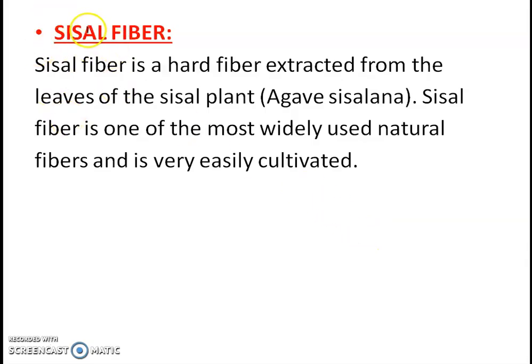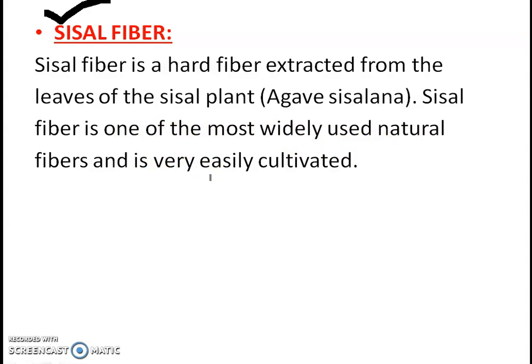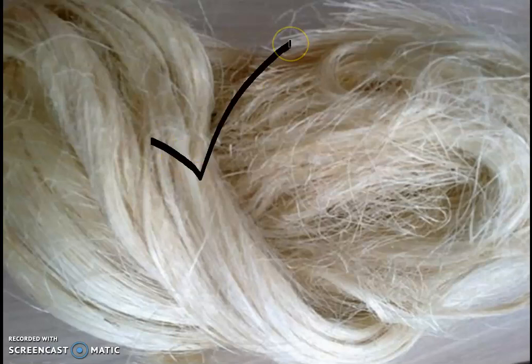Under leaf fiber we will discuss sisal fiber. Sisal fiber is a hard fiber extracted from the leaves of the sisal plant, Agave sisalana. All leaf fibers are hard in nature because of their increased lignin content. Sisal fiber is one of the most widely used natural fibers and is very easily cultivated. In fact, all vegetable fibers are among the most widely used.